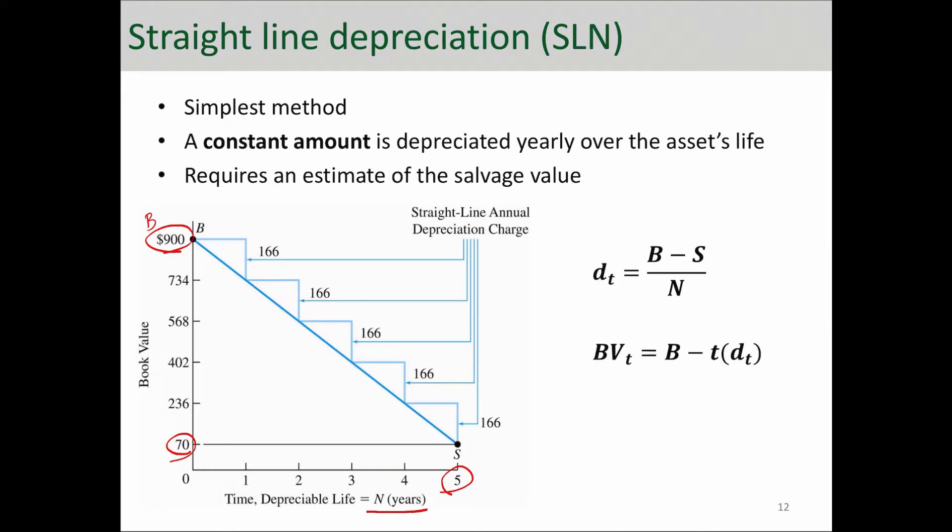Every year the depreciation is the same amount. To find that depreciation amount for each year, you need to take the cost basis which is $900 minus salvage value which is $70 over depreciable life which is five, and that will give you $166 depreciation each year. The key indicator that it's straight line depreciation is that depreciation amount each year is the same.